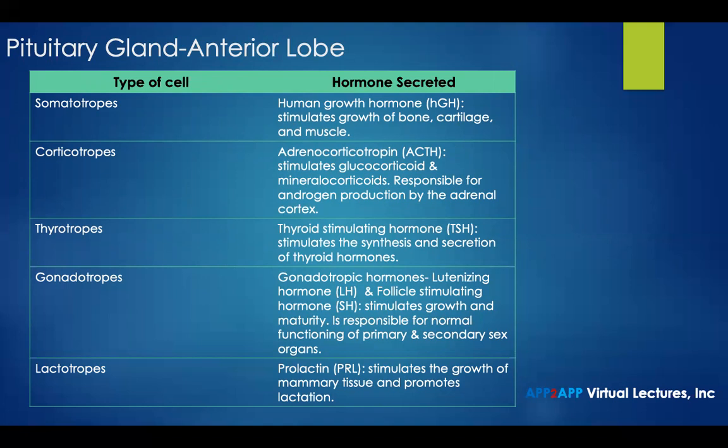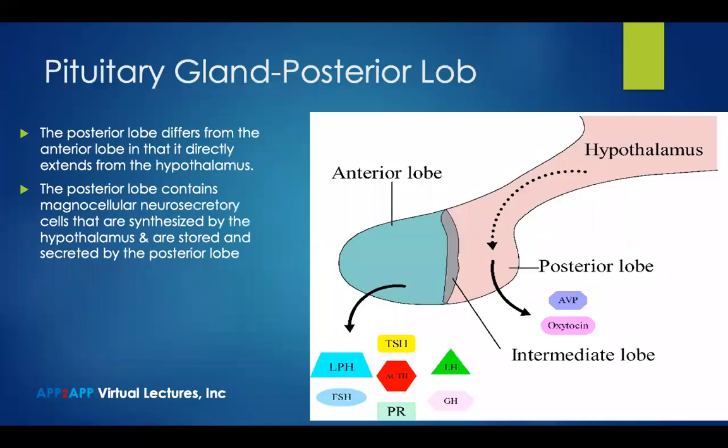Gonadotropes secrete gonadotropic hormones including luteinizing hormone and follicle-stimulating hormone, which stimulate growth and maturity and are responsible for normal functioning of primary and secondary organs. And finally, we have lactotropes, which secrete prolactin. Prolactin stimulates the growth of mammary tissue and promotes lactation.